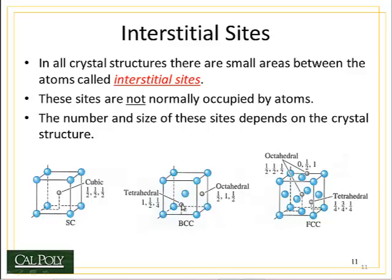There are other kinds of interstitial sites such as tetrahedral sites and octahedral sites. Tetrahedral sites are surrounded by four other atoms — this tetrahedral site is surrounded by this atom, this atom, this one, and this atom over here. An octahedral site is surrounded by eight sides and six atoms. I misspoke.